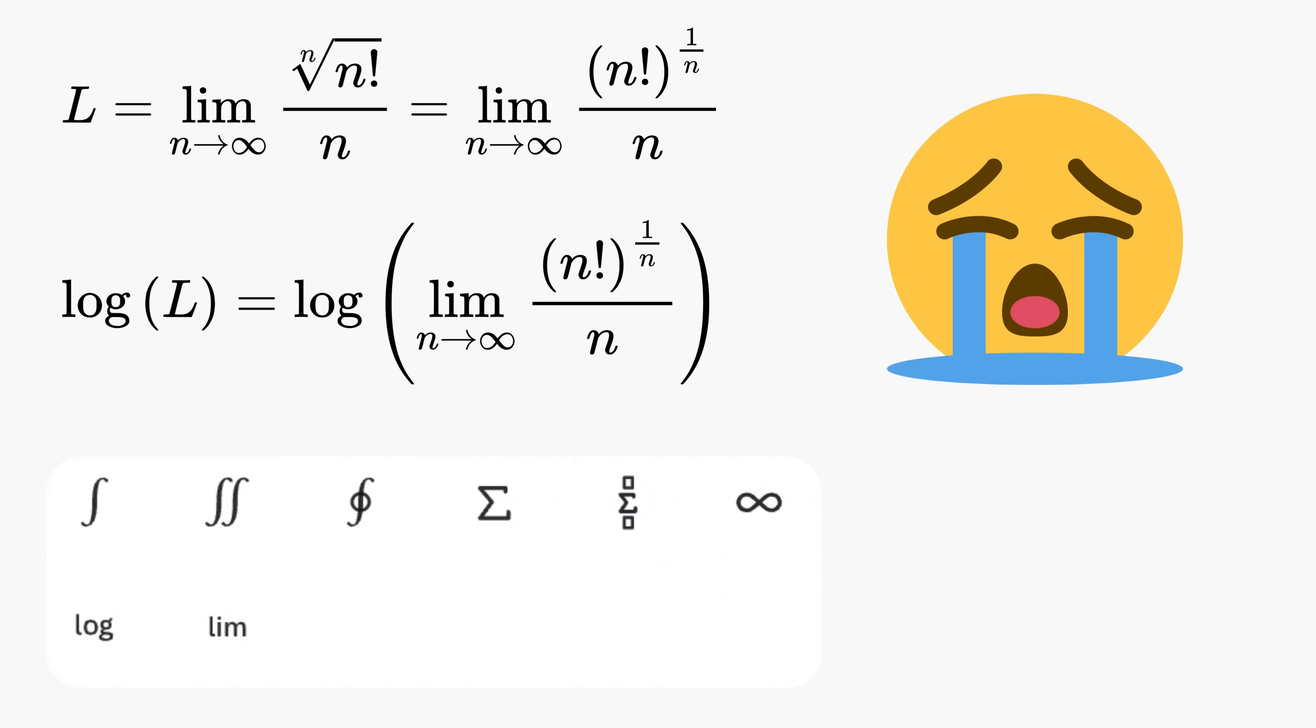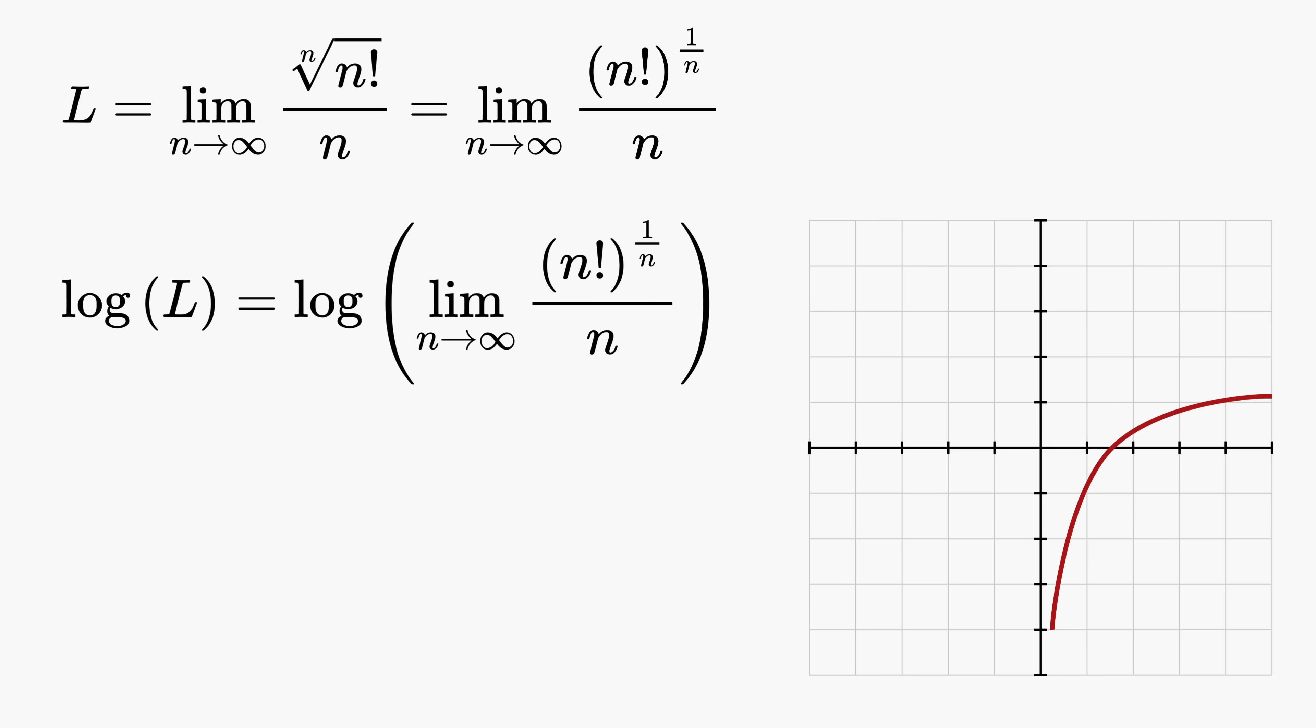Now here comes an important idea. The natural logarithm is a continuous function. Because of this property, we are allowed to interchange the order of the limit and the logarithm, which means instead of first taking the limit and then taking the log, we can first take the log and then take the limit.